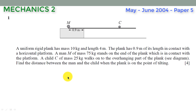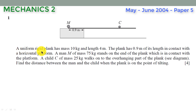This question is an application of the principle of moments, a concept we learned in mechanics. I will use it to show you how we arrive at the solution. Let's read the question together. We are told that a uniform rigid plank has a mass of 10 kilograms and a length of 4 meters. Before we go further, let's analyze this information.